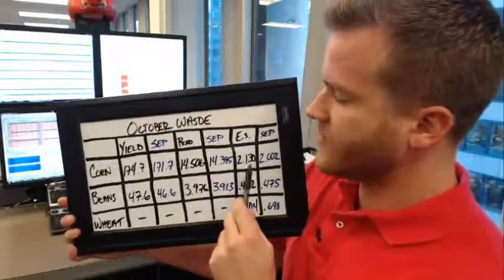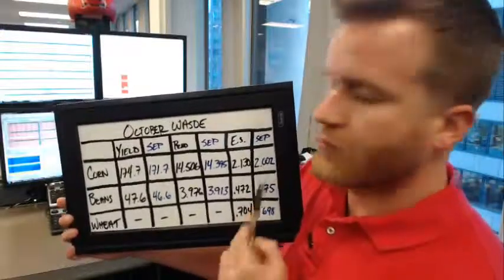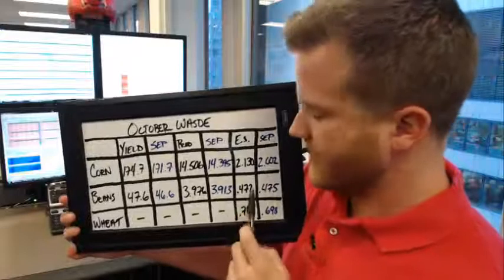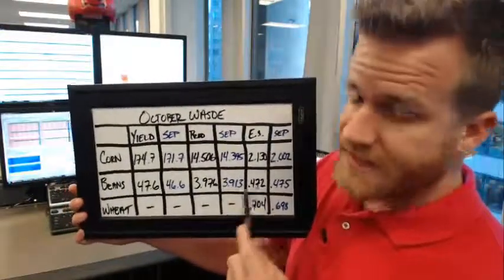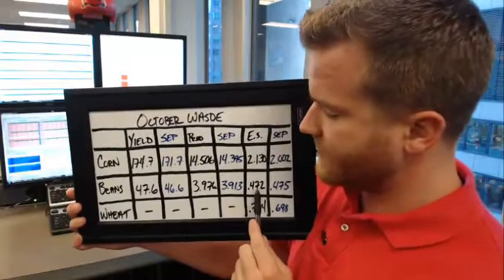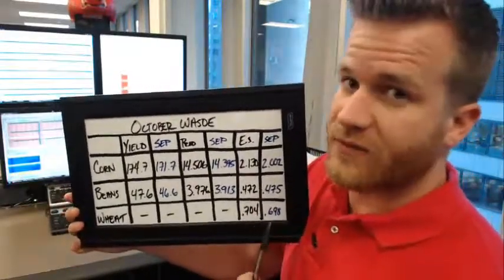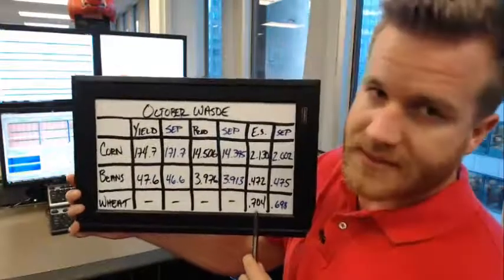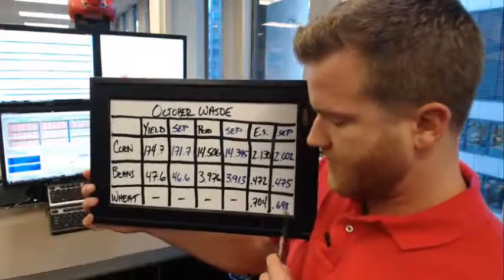Ending stocks for corn are expected to come in at 2.130 billion bushels versus 2.002 in September, so a little higher. The only estimate lower on the board is bean ending stocks — the average trade estimate is 4.72 million bushels versus 4.75 in September. Wheat ending stocks are expected to come in at 704 million bushels versus 698 in September.